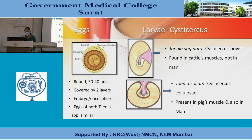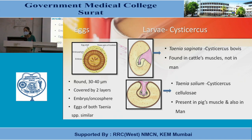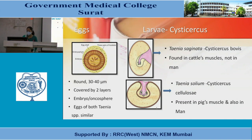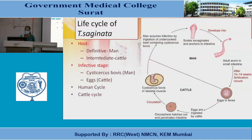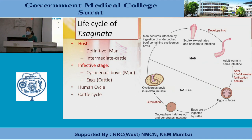Eggs are round, 30–40 micrometers, covered by two layers with an oncosphere embryo inside. Eggs of both Taenia species are morphologically similar. Larval forms: T. saginata larva is cysticercus bovis, found in cattle muscle, not in men. T. solium larva is cysticercus cellulosae, found in pig muscle and also in men. Life cycle of T. saginata: definitive host is man, intermediate host is cattle, infective stage is cysticercus bovis in man and eggs in cattle.